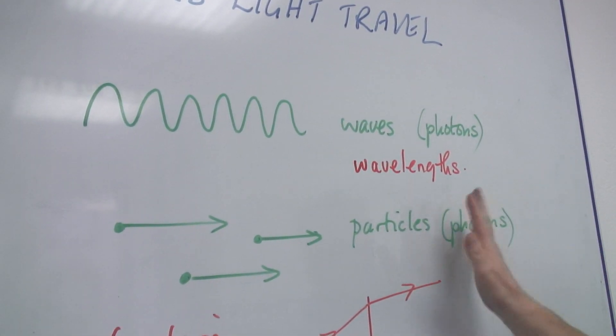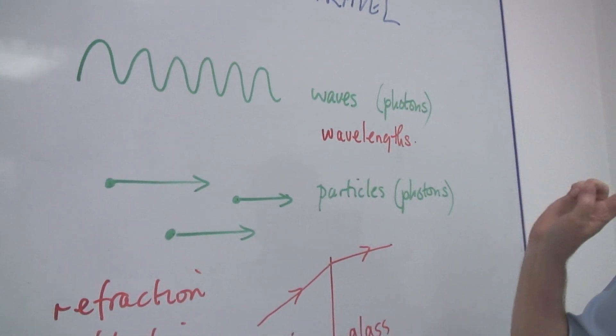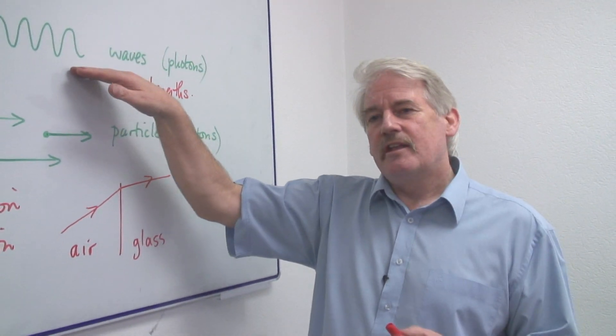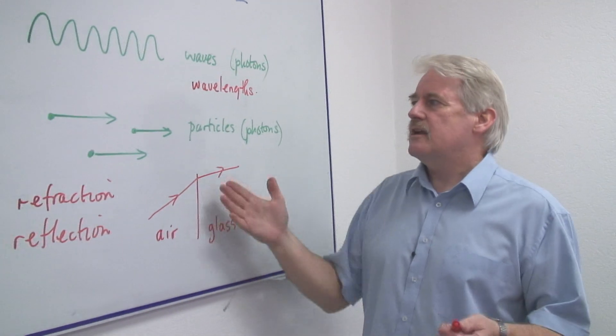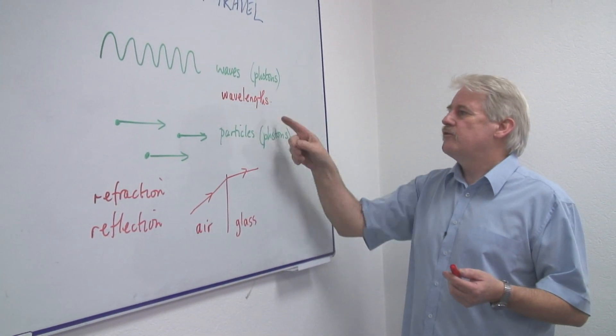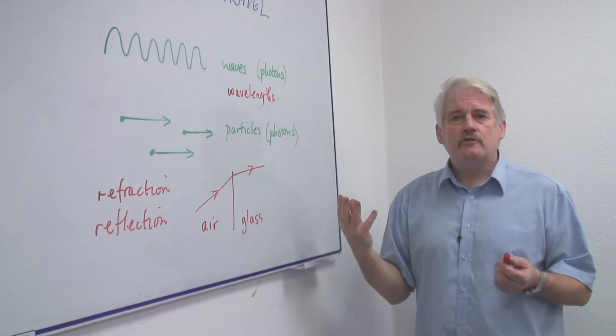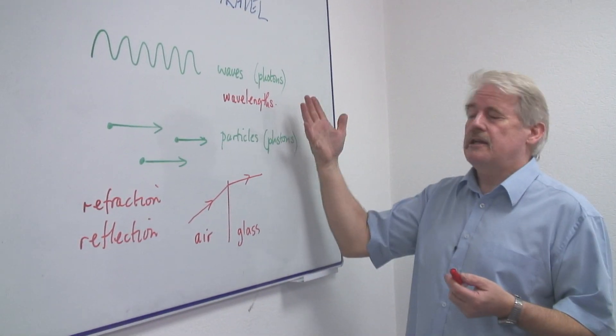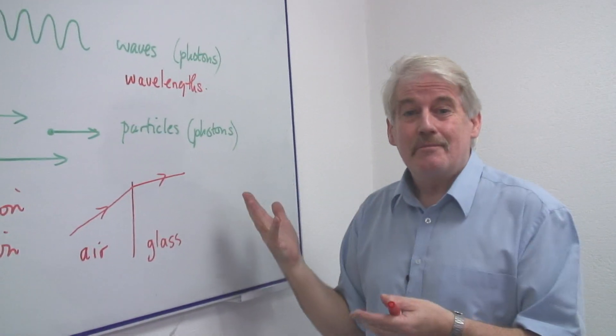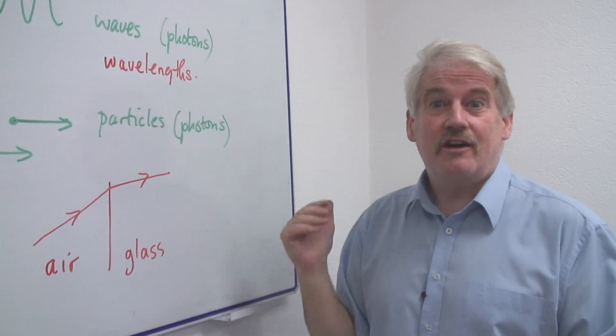So simply put, we do think that light is a wave. We know it sometimes behaves like a particle. And we have this word photon. A photon has wave properties, but a photon, in its very name, is behaving like a particle.